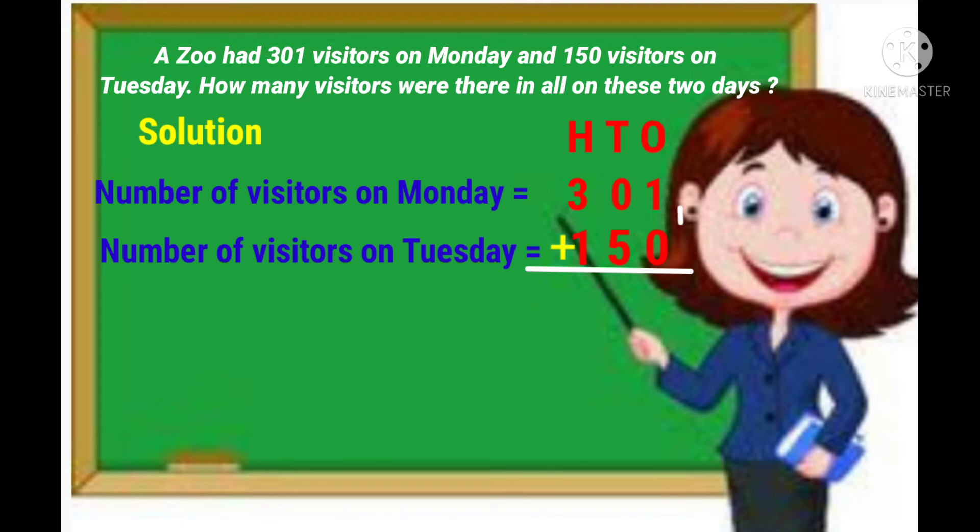Children, first add the digits in the ones column. 1 plus 0 is equal to 1. Any number plus 0 is equal to same number. 1 plus 0 is equal to 1. Write 1 in the ones column.